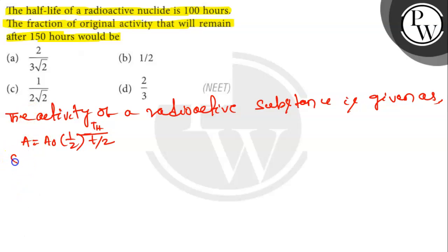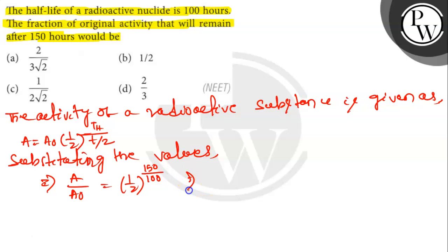Substituting the values, that implies A by A₀ is equal to 1 by 2 to the power 150 divided by 100. That implies A by A₀ is equal to 1 by 2 to the power 3 by 2.